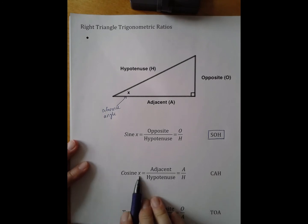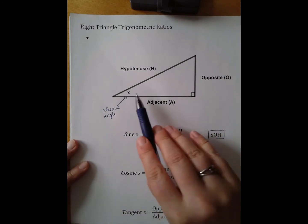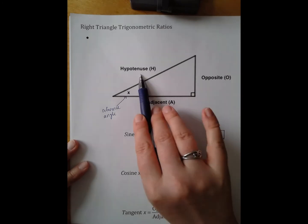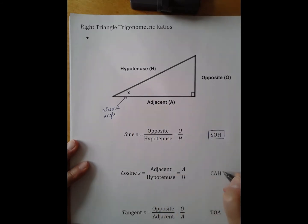Cosine of X is the adjacent over hypotenuse, A over H. And we shorten that to be CAH.